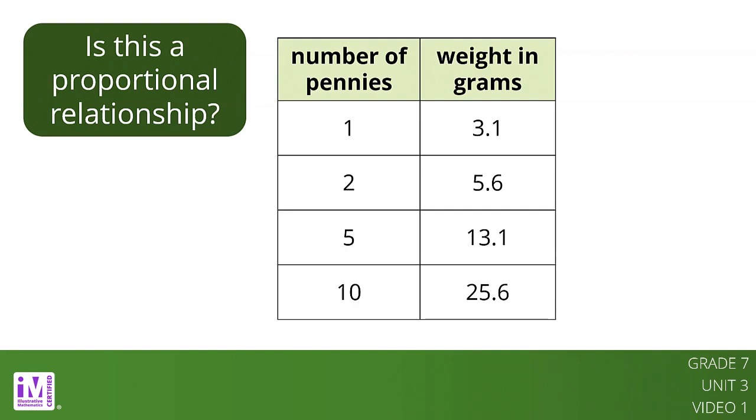We can find the unit rate by taking the weight in grams divided by the number of pennies. This gives us the grams per penny.